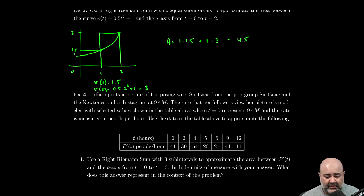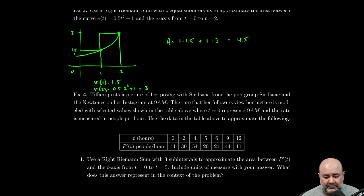So that would be the area of the region using right Riemann sums. I'm about to run out of time on this video, so I'll see you guys in the next one.